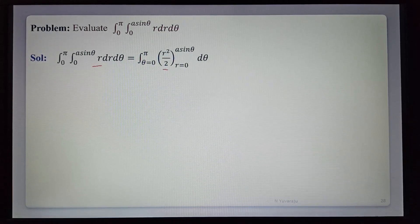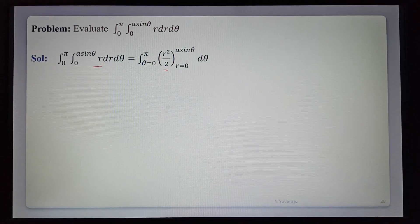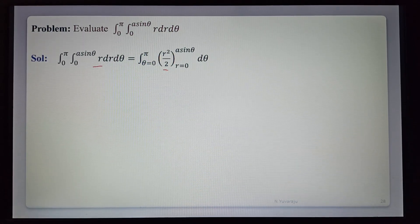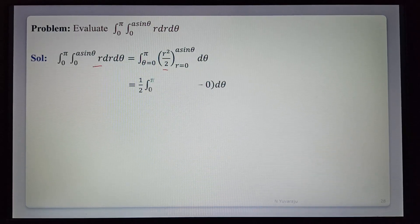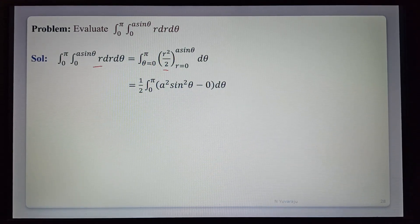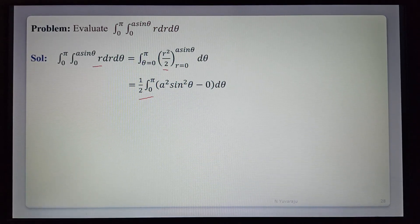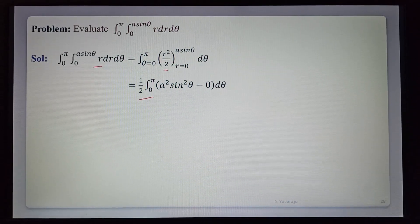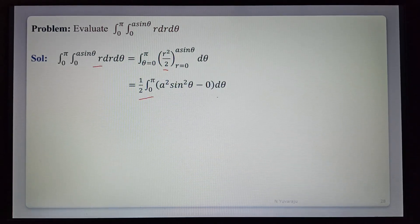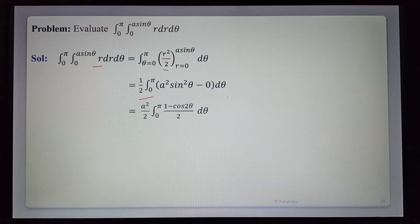Integrating with respect to r gives r²/2. Substituting the upper limit r = a·sin θ and lower limit 0, with 1/2 as the common constant, we get the integral from 0 to π of a²·sin²θ dθ.